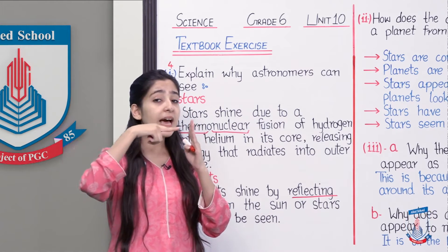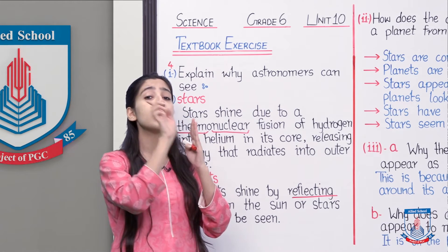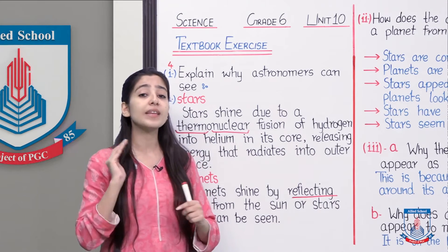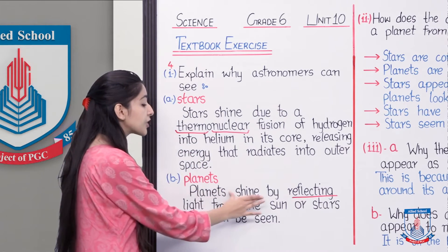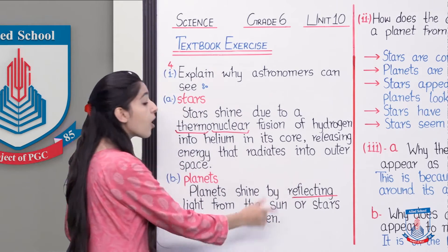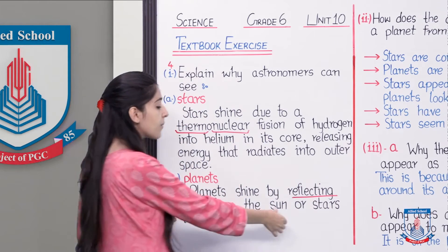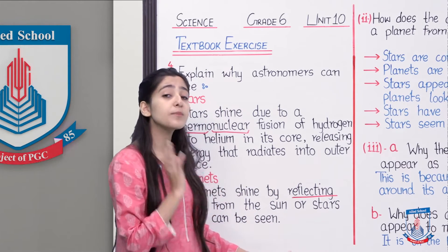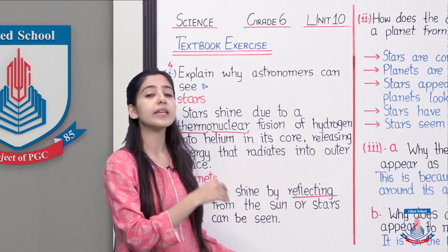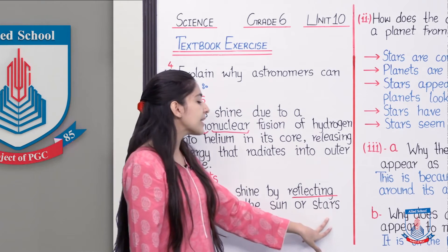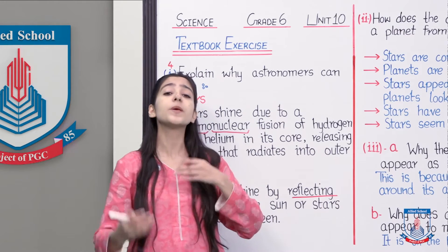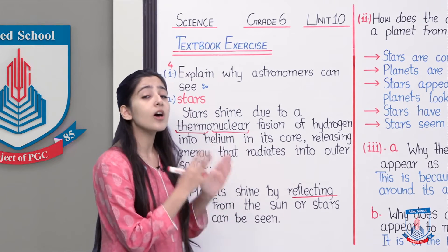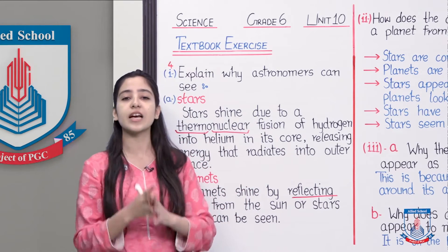For example, agar is direction mein light aayi, usne takra ke apni direction aise change kar li aur bounce back kar li — so this is reflection of light. Planets jo hain, woh shine karte hain by the reflection of light, aur yeh jo light hai jo reflect ho rahi hai, it is coming from either the sun — agar subah ka time hai toh obviously sun se usko kaafi light mil jayegi, woh is light ko reflect karenge — aur humein woh nazar aa sakte hain. Second is stars — stars bhi luminous object hain, stars bhi apni light produce karte hain, yeh light ko bhi planets reflect karte hain, aur humein raat ke time woh planets nazar aa sakte hain.